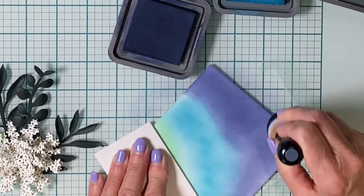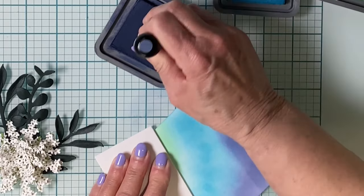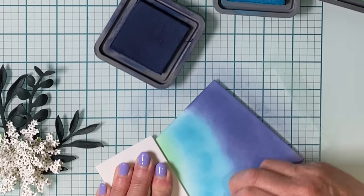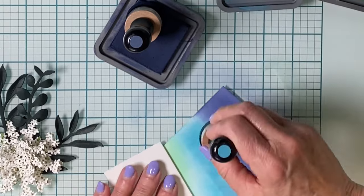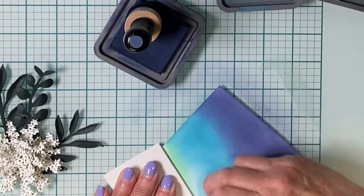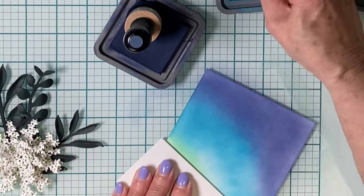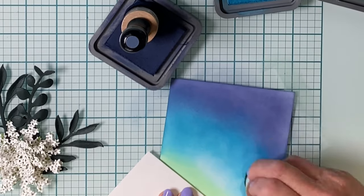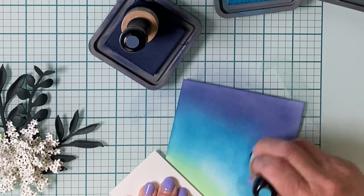I've just grabbed a piece of scrap cardstock so that I can hold my panel and avoid getting fingerprints on it. To create a nice, smooth, blended background, I probably add three to four layers of ink, extending one color into the next with each application.